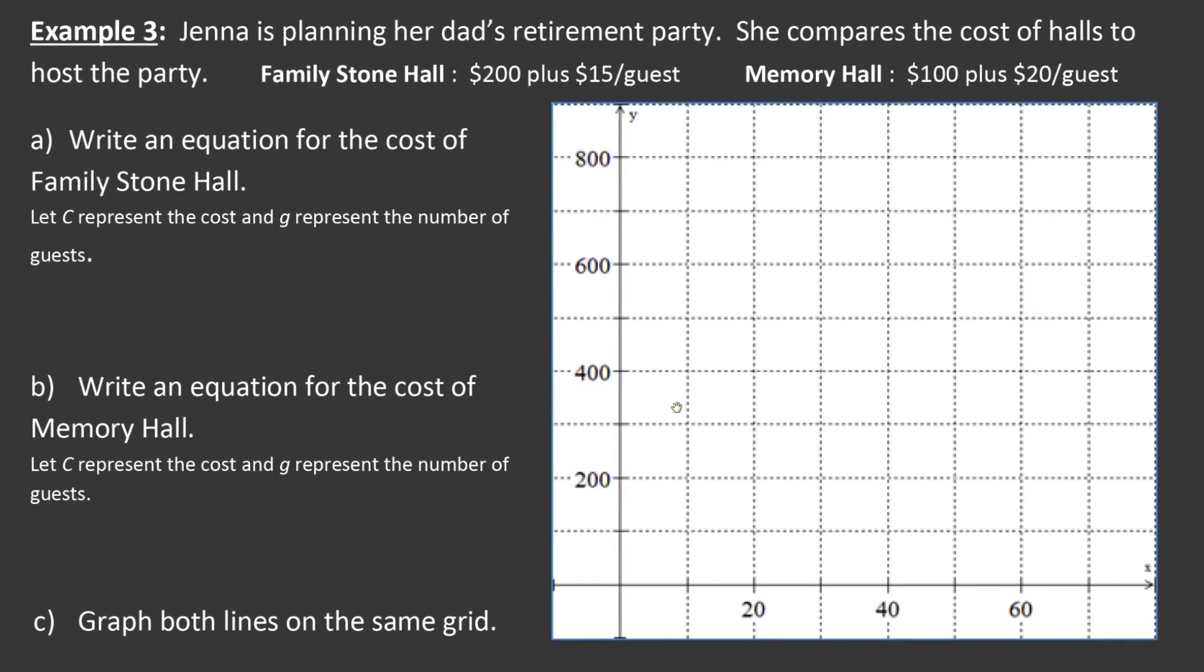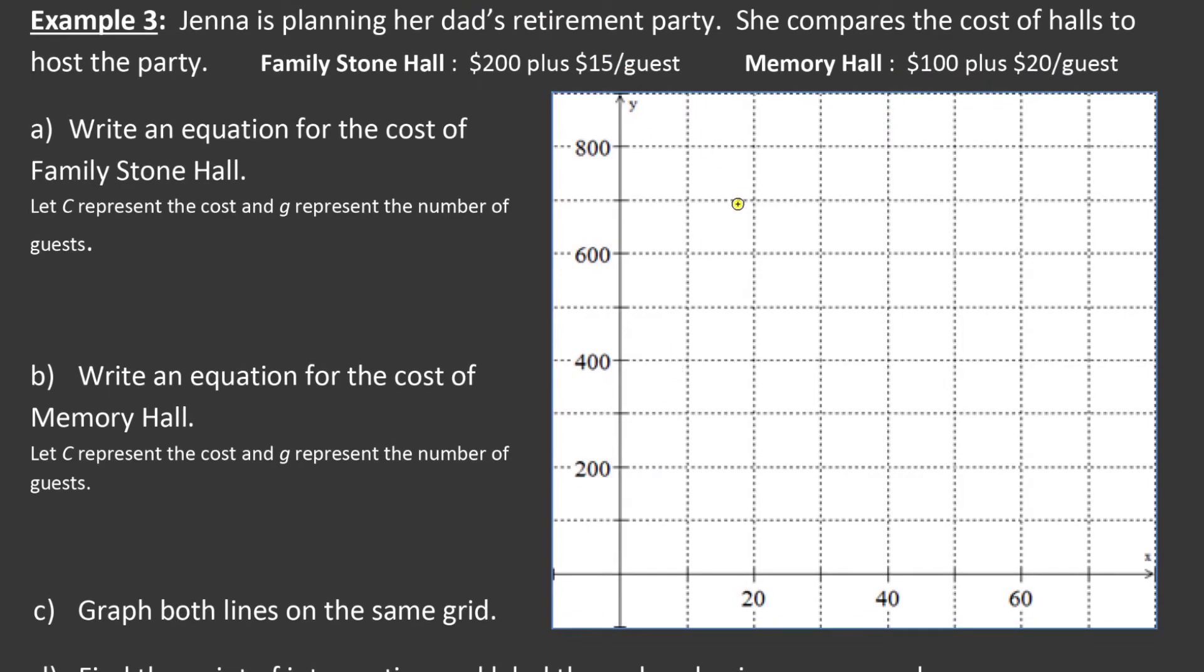One last example is more of a word problem scenario here. Jenna is planning her dad's retirement party. How kind of her. She compares the cost of different rental halls to host this party. There's two rental halls we're going to check out here. Family Stone Hall charges $200, that's called a flat fee plus $15 a guest. Memory Hall charges $100, that's their flat fee plus $20 per guest. They want us to write an equation for the cost of Family Stone Hall. So whenever you're asked to create an equation from a word problem, you should do let statements. So here we have let C represent the cost and G represent the number of guests. So C is the cost. This is for Family Stone Hall here. So my cost is going to be a flat fee of $200 and $15 per guest where G is the number of guests.